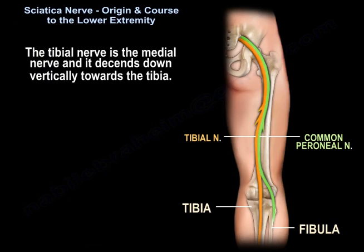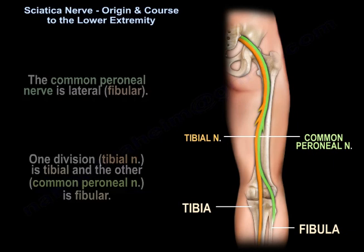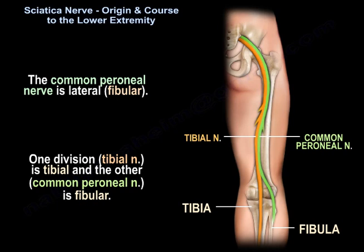The tibial nerve is the medial nerve, and it descends down vertically towards the tibia. The common peroneal nerve is the lateral nerve and is the fibular nerve.